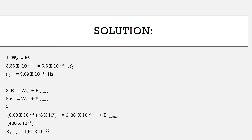Then number two: calculate the maximum kinetic energy of electrons ejected from cesium by a photon of wavelength 400 nanometers. For part one, write the formula: W₀ equals h multiplied by f₀. Substituting: 3.36 × 10⁻¹⁹ equals 6.63 × 10⁻³⁴ multiplied by f₀. The cutoff frequency is 5.09 × 10¹⁴ hertz.